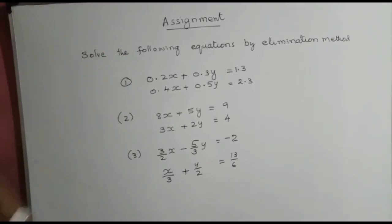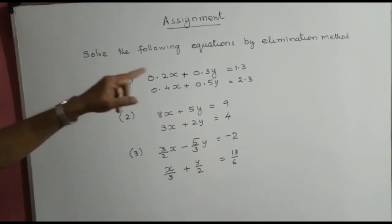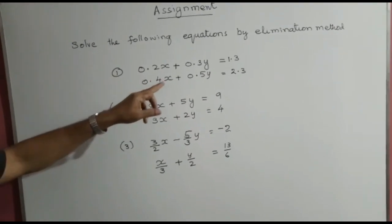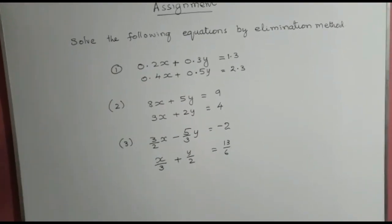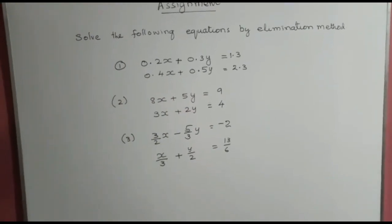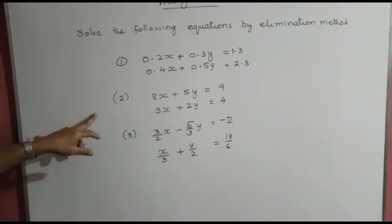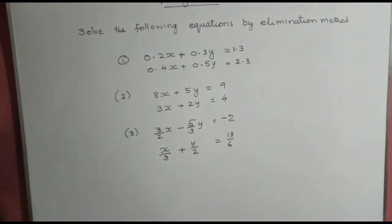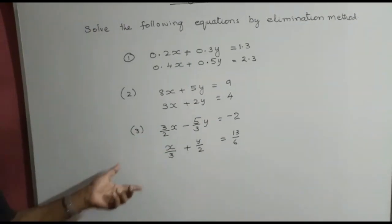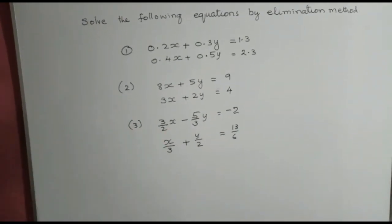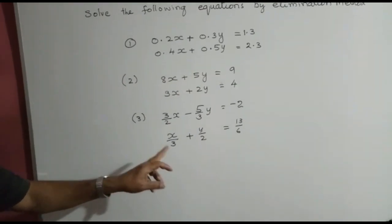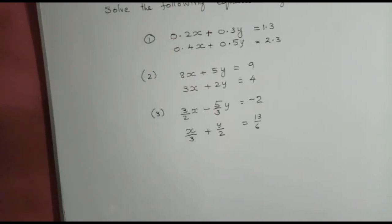Now let us see the assignments. Solve the following equations by elimination method. First: 0.2x plus 0.3y equals 1.3, and 0.4x plus 0.5y equals 2.3. Second: 8x plus 5y equals 9, and 3x plus 2y equals 4. Third: 3 by 2x minus 5y by 3 equals minus 2, and x by 3 plus 5y by 2 equals 13 by 6.